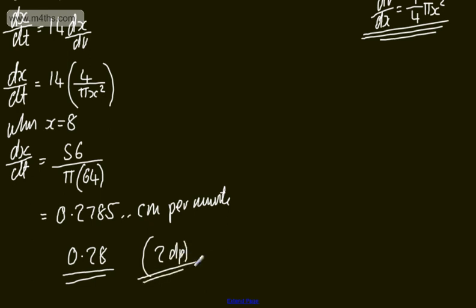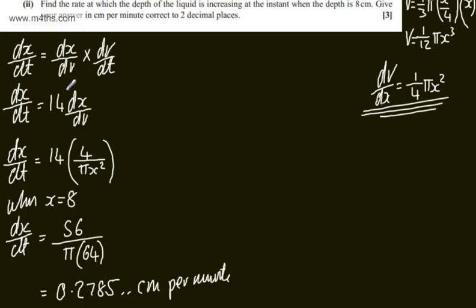So all we've done is found dx dt using the chain rule. We've written dx dv multiplied by dv dt.